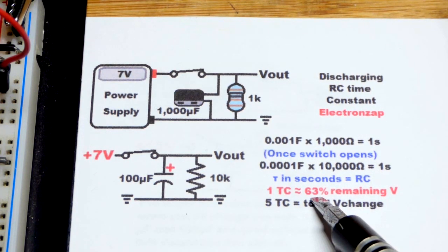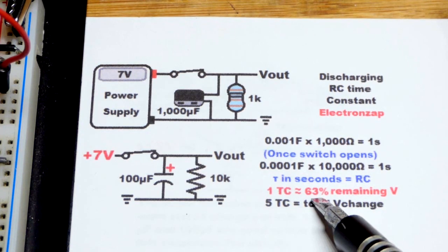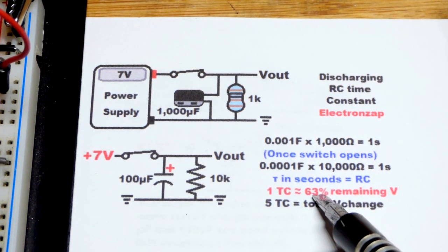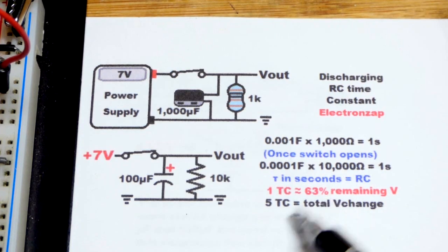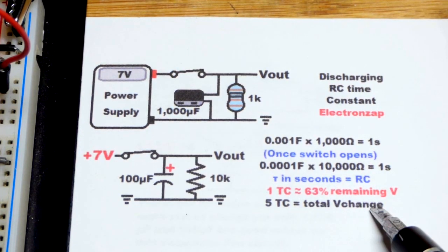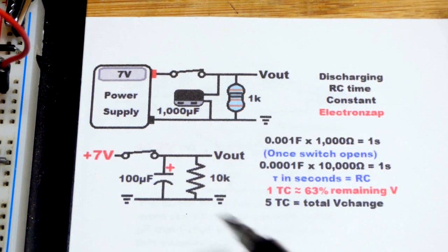So in about one second we're going to get 63% of the voltage change. The next time constant we're going to get 63% of what is left and so on. After about five of them we'll have the total voltage change right there.